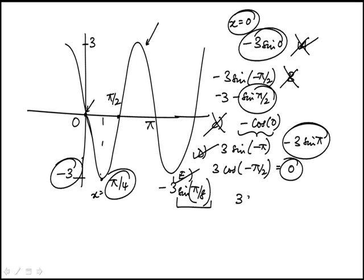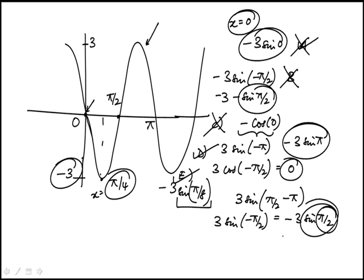d is going to be three times sine. 2x would be pi over two minus pi. This is going to be three sine minus pi over two which is minus three sine pi over two. Sine pi over two is one. So that is indeed minus three. So that one works.